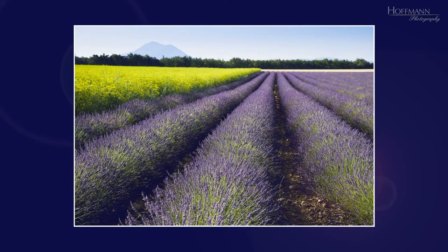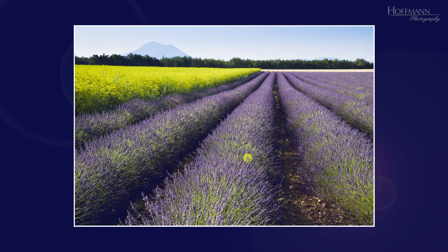This image is dominated by the rows of lavender that result in lines converging in the distance. Even the bushes in the background form a line rather than a distinct shape. Of course, there is a shape of the mountain and the lavender has some texture to it, but the rows and therefore the lines are clearly the main subject in this image.